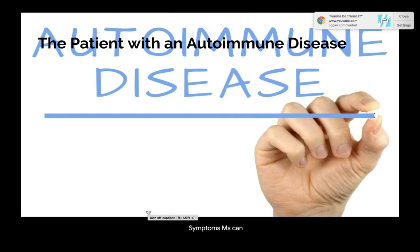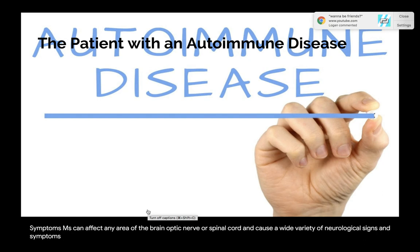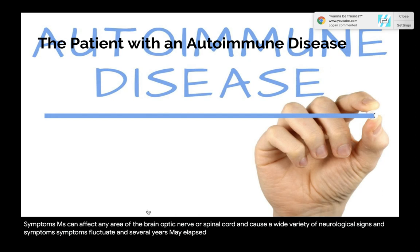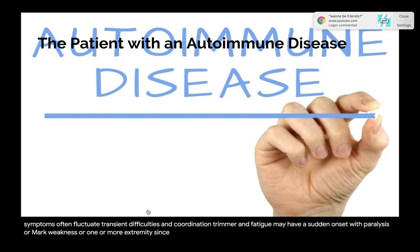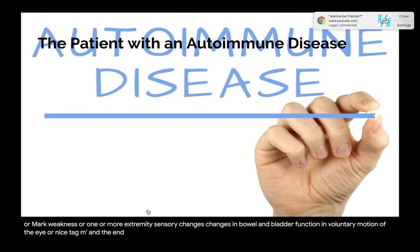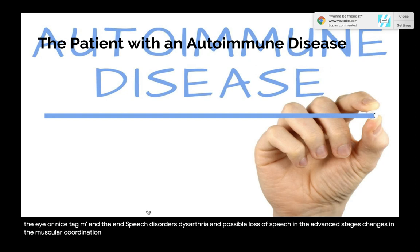MS can affect any area of the brain, optic nerve, or spinal cord, causing a wide variety of neurological signs and symptoms that fluctuate over time. Initial symptoms often include transient difficulty in coordination, tremor, and fatigue. There may be sudden onset with paralysis or marked weakness of one or more extremities, sensory changes, changes in bowel and bladder function, involuntary eye movement (nystagmus), and the individual may later become partially or completely blind. Speech disorders, dysarthria, and possible loss of speech may occur in advanced stages.